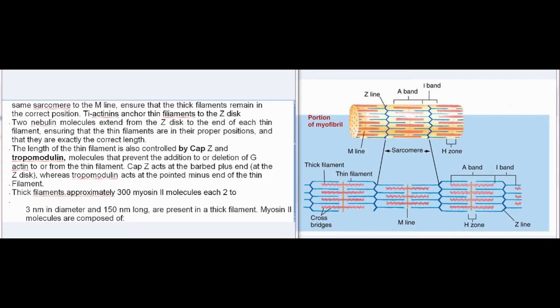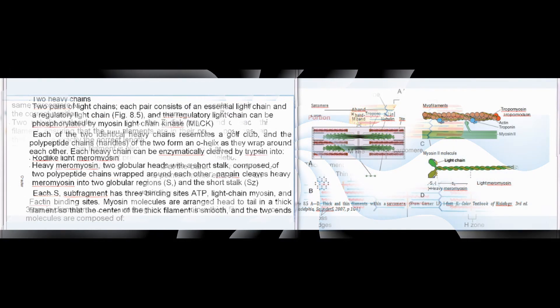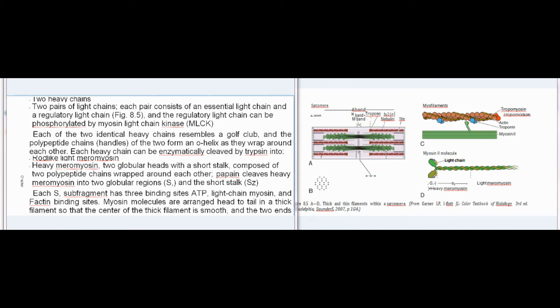Cap-Z acts at the barbed plus end at the Z-disc, whereas tropomodulin acts at the pointed minus end of the thin filament. Approximately 300 myosin-2 molecules, each 2–3 nanometers in diameter and 150 nanometers long, are present in a thick filament. Myosin-2 molecules are composed of two heavy chains and two pairs of light chains — each pair consisting of an essential light chain and a regulatory light chain — and the regulatory light chain can be phosphorylated by myosin light chain kinase (MLCK). Each of the two identical heavy chains resembles a golf club, and the polypeptide chain handles of the two form an α-helix as they wrap around each other.